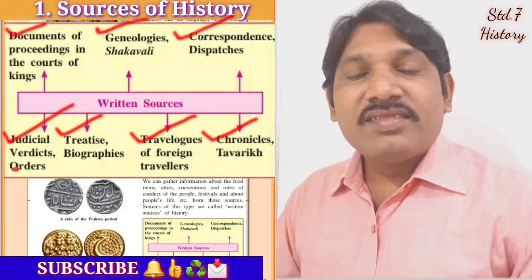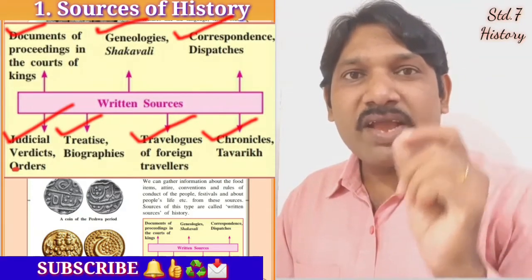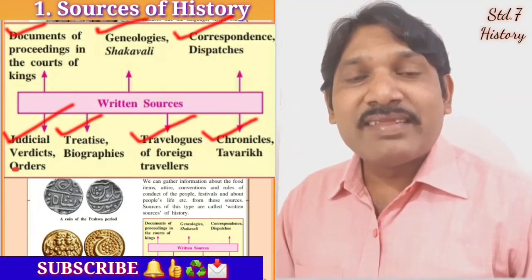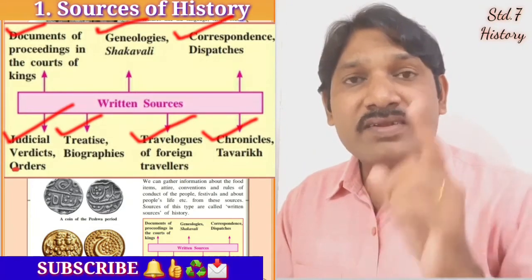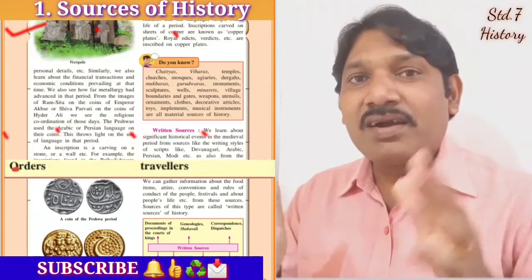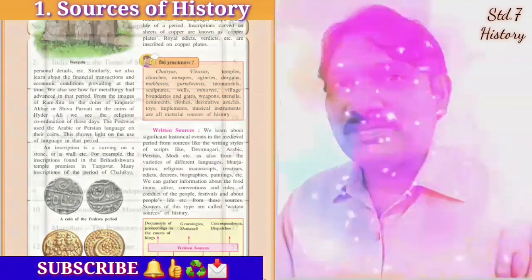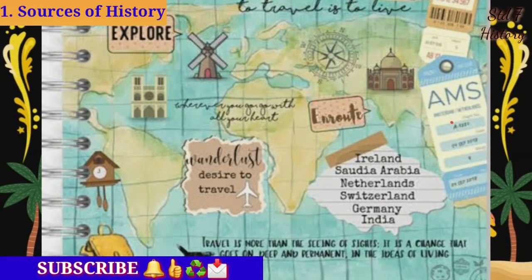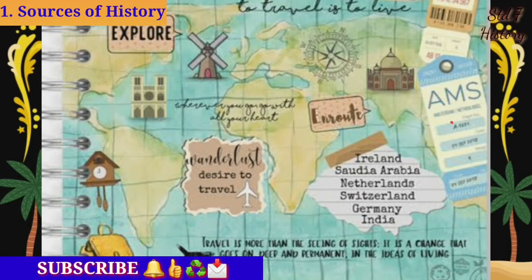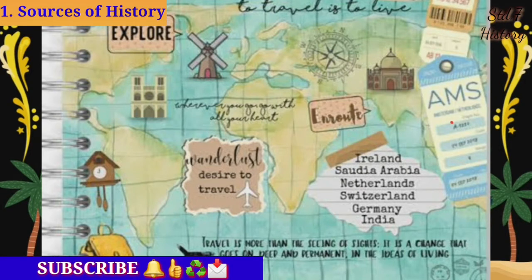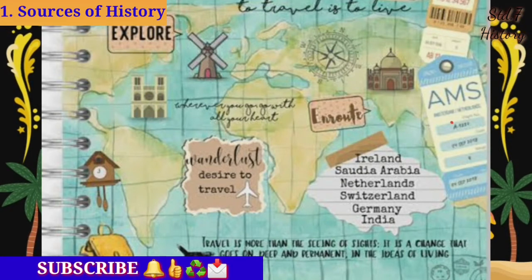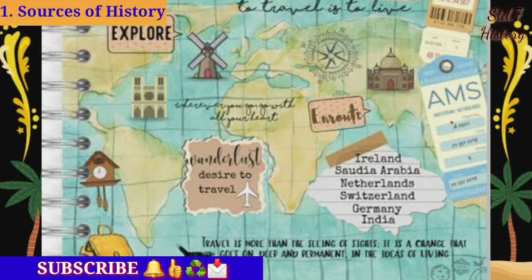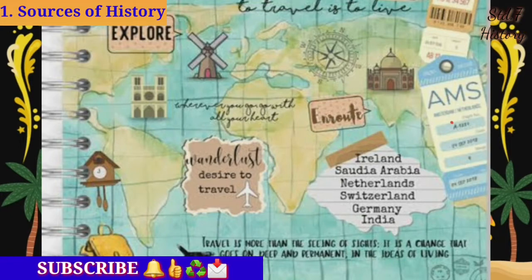We shall now study written sources in a graphical manner — travel logs, biographies, Tawarikh, and Bakhar. First, we study the travel logs of travelers from other countries who came to India and wrote accounts of their travels. Some of them are Al-Biruni, Ibn Battuta, and Nicola Manucci. These travelers came to India and wrote travel logs. We shall now have short information about each of them.